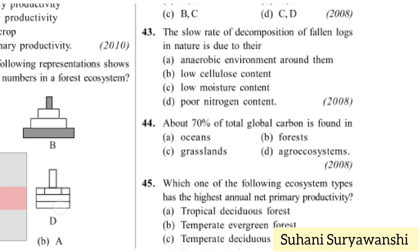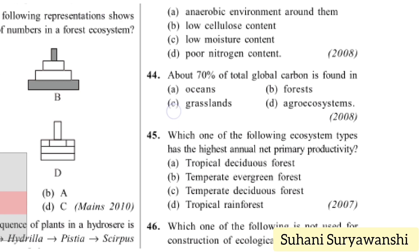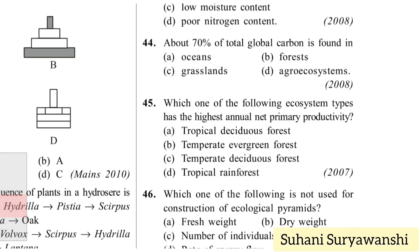About 70% of total global carbon is found in oceans. The answer is option A — oceans.